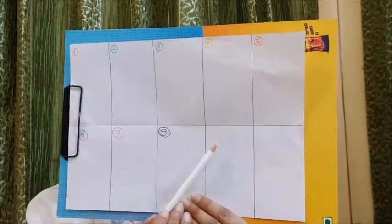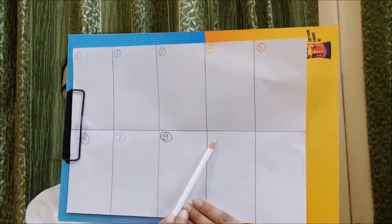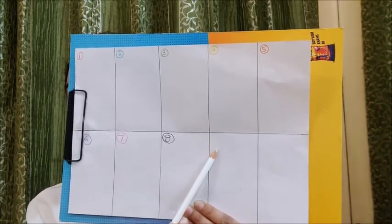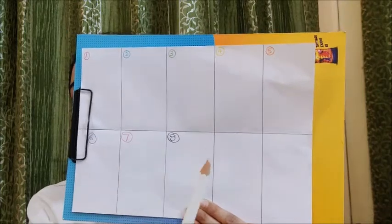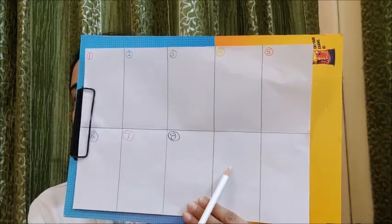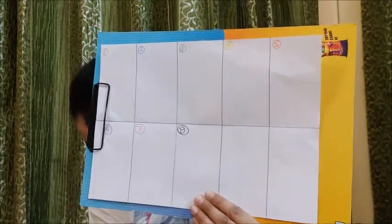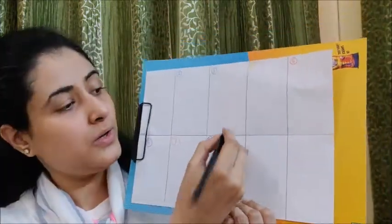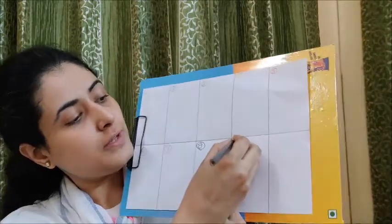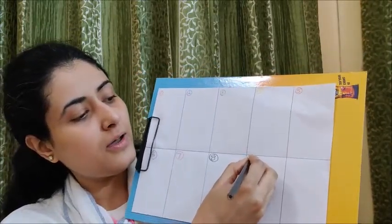Children, if I write with white color pencil, you will not be able to see the number. Because this pencil is also white and the paper is also white. But don't worry, I have an idea. You write with black color pencil. You will write here number 9.